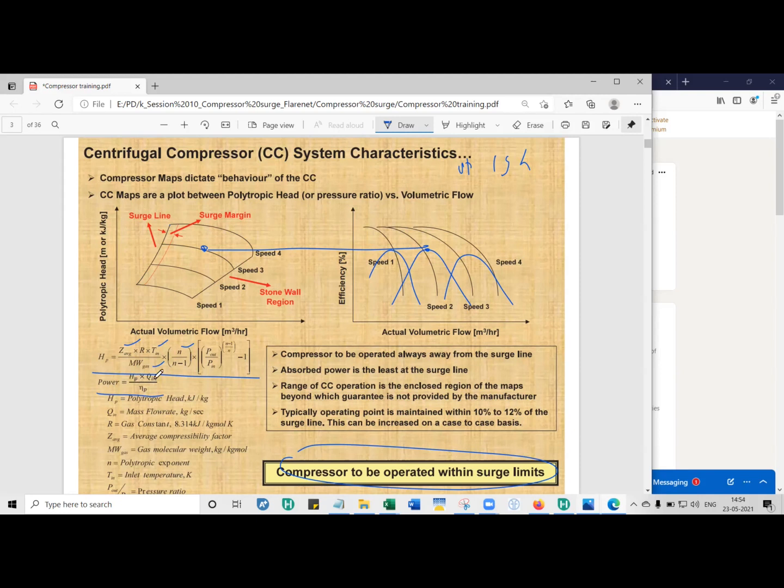So from this, what we can understand is, so the amount of power that is required to compress a gas from an initial pressure to the final pressure is the polytropic head into the mass flow rate divided by the polytropic efficiency. So this is an easy expression, at least to me because I use that because polytropic head is kilojoule per kg, and flow rate is kg per second. So when the kgs get cancelled in numerator and denominator, you get. So what we can understand is the more the polytropic for a given mass flow rate, as the polytropic head increases, you need more power to compress the gas.